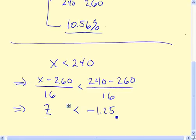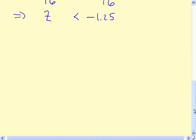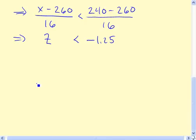So now we can use NORMSDIST. Because if we think of asking, what proportion of Z values are less than minus 1.25, it's going to be exactly the same as the proportion of X values that are less than 240.